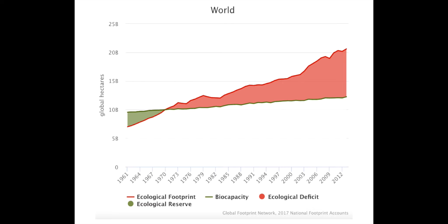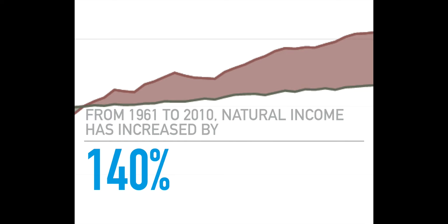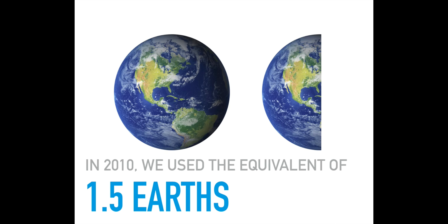Let's look at our ecological footprint compared to our biocapacity. We can see that in the late 1960s, we were already consuming faster than the earth could produce and generate resources for us. This means we have been living unsustainably since then, and if we keep on this path, we're going to run out of resources. From 1961 to 2010, our natural income — the amount of resources we take from the environment — increased by 140%. Also in 2010, we were already using the equivalent of one and a half earths, meaning it would take one and a half years for the earth to regenerate all the resources we took from it in only one year.